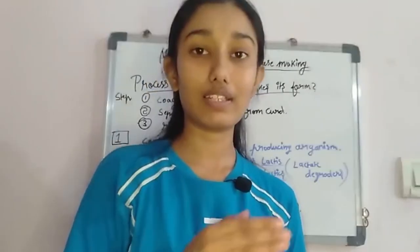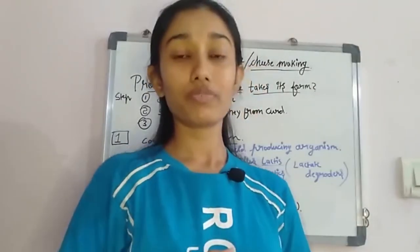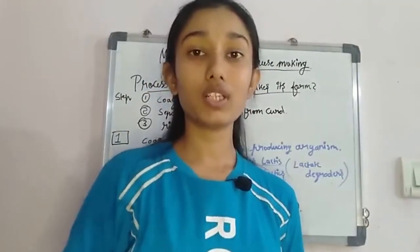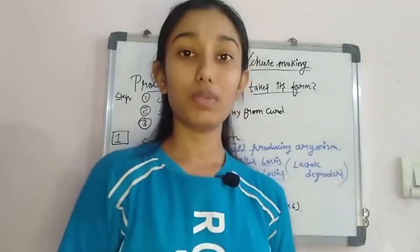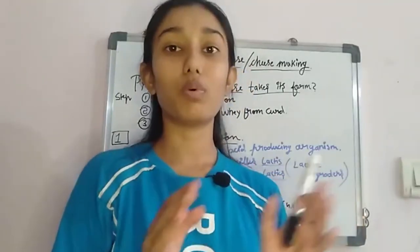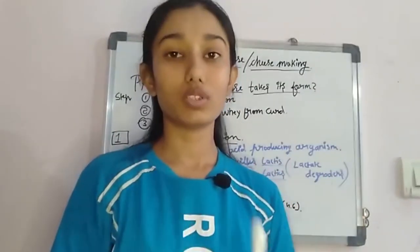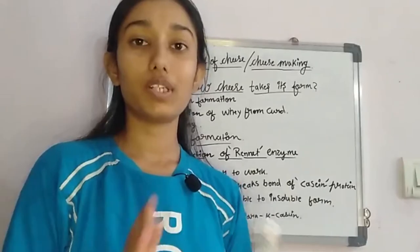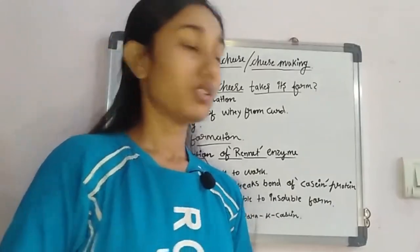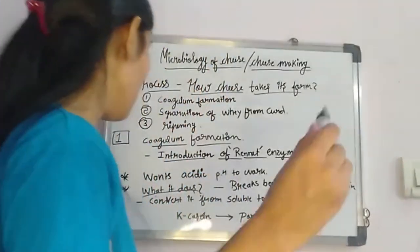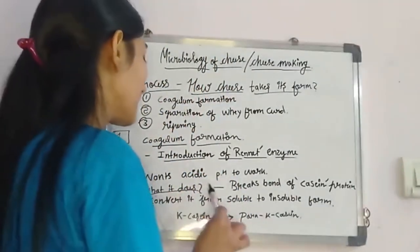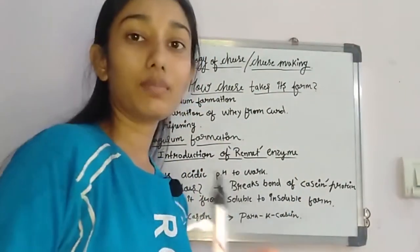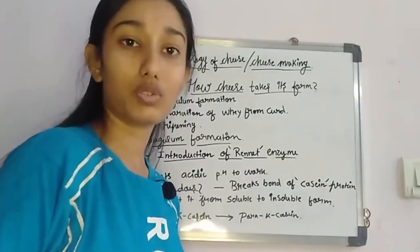Increasing the acidity of the milk is necessary because the next step is to introduce rennet enzyme, and rennet enzyme functions optimally at a very low, acidic pH. That acidic pH has already been provided by introducing the microorganisms and producing lactic acid.